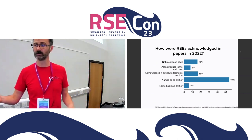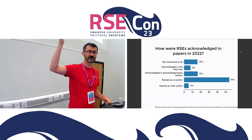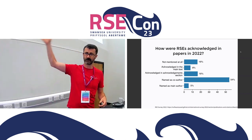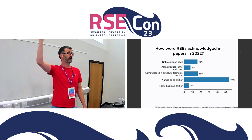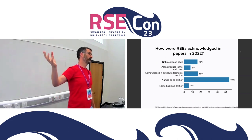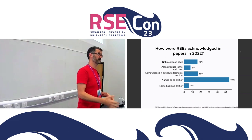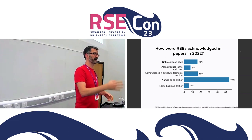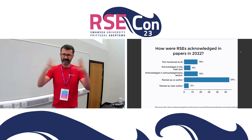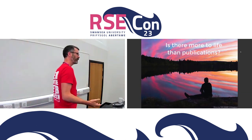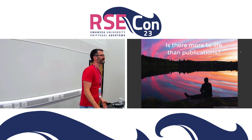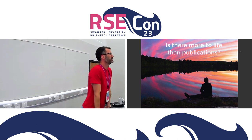It's not terrible. Over half of them are being named as co-authors. There are a few main authors. There's still 16% who aren't being acknowledged at all, which is lower than when we first measured in 2017. But then I thought — why are we thinking about publications as the way of recognizing research software engineering?